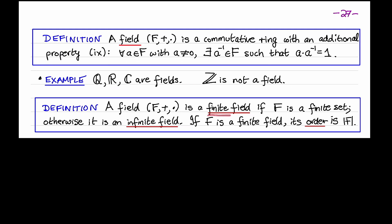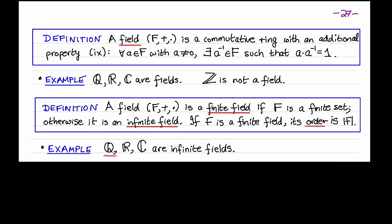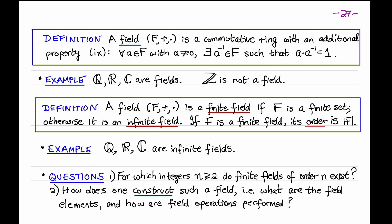The field is said to be finite if the set F is a finite set; otherwise, the field is an infinite field. If the field is a finite field, its order is the number of elements in the set F. For example, the rational numbers, the real numbers, and the complex numbers are infinite fields. The question I want to address next is: for which integers n does there exist a finite field of order n? In later lectures, I'll address a second question — namely, how does one construct such a field of order n, assuming that a field exists? In other words, what are the elements of the field, and how does one perform the field operations of addition and multiplication?